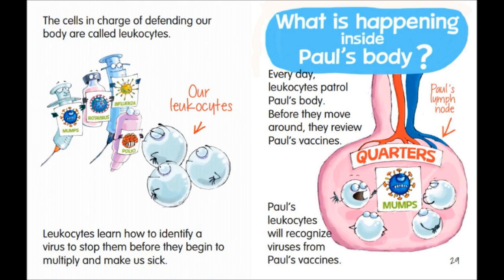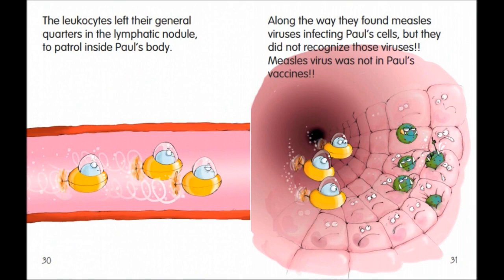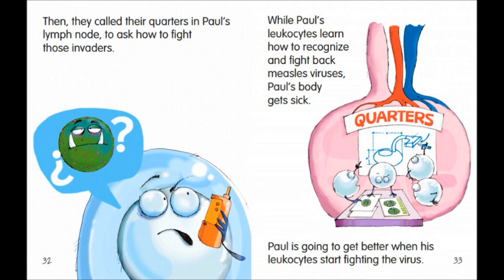What is happening inside Paul's body? Every day, leukocytes patrol Paul's body. Before they move around, they review Paul's vaccines. Paul's leukocytes will recognize viruses from Paul's vaccines. The leukocytes left their general quarters in the lymphatic nodule to patrol inside Paul's body. Along the way, they found measles viruses infecting Paul's cells, but they did not recognize those viruses. Measles virus was not in Paul's vaccines. Then, they called their quarters in Paul's lymph node to ask how to fight those invaders. While Paul's leukocytes learn how to recognize and fight back measles viruses, Paul's body gets sick.